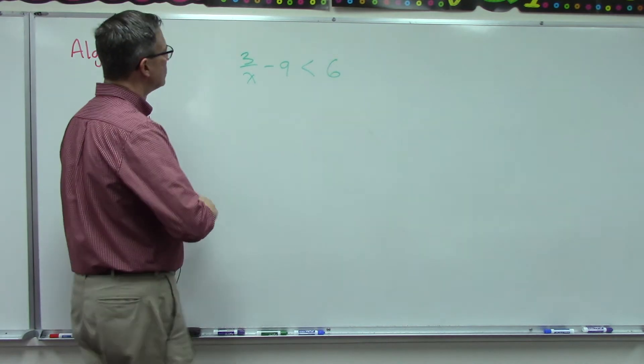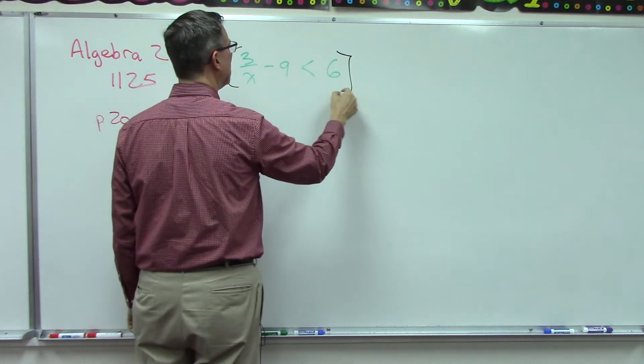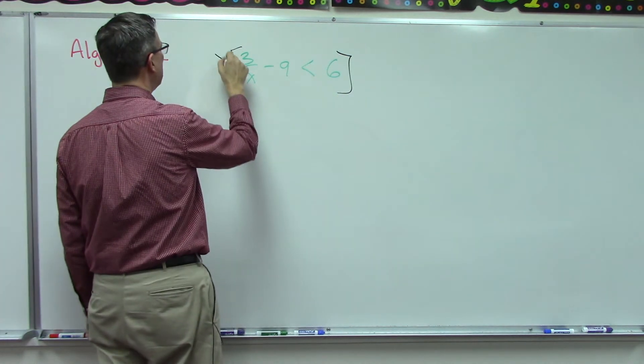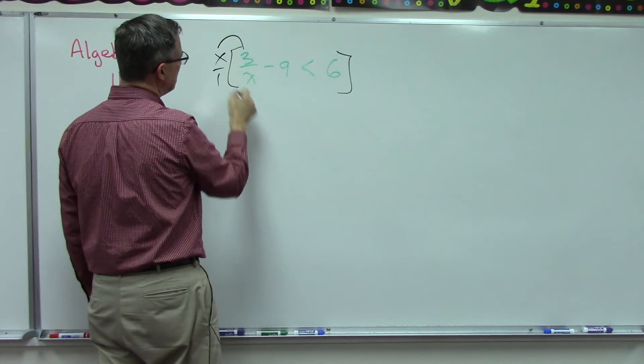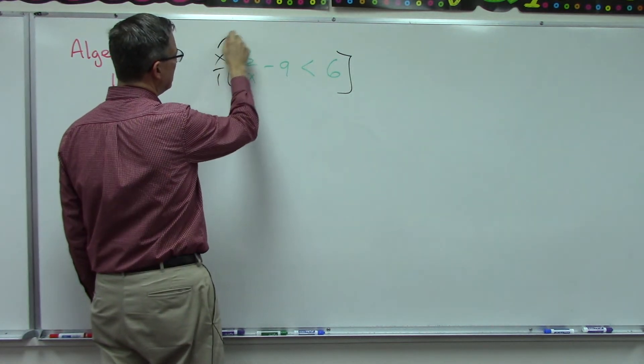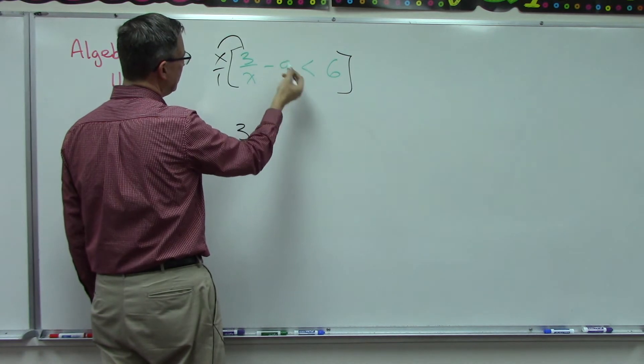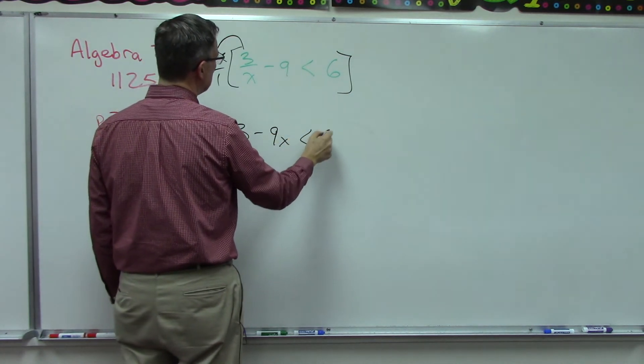Okay, so obviously the common denominator is X. So again, I like to just put brackets around the whole thing, put the X out front. Now when I distribute this times this, picture the X is canceling and I get three. Take this times this and nothing cancels, so you get negative nine X is less than six X.